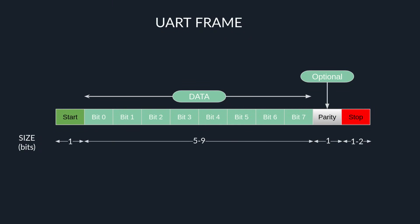UART sends data in the form of well-defined frames. The frame always starts with a start bit to indicate the beginning of the frame. Then data follows — in most cases it will be 8 bits of data, but the protocol specifies it can be from 5 to 9 bits. After that, a parity bit comes, whose purpose is to indicate potential errors in the transmission. Depending on the mode, it counts the number of ones and tries to make them odd or even. But the parity bit is really an optional field and is very rarely used. The frame end is indicated with a stop bit — it can be one, one and a half, or two bits in size, but in most cases it will be just one bit.